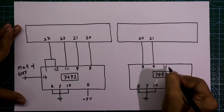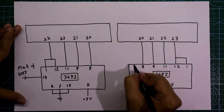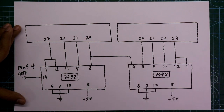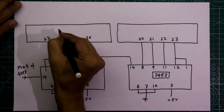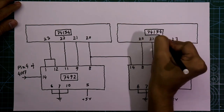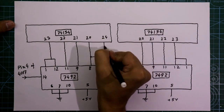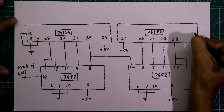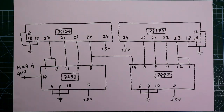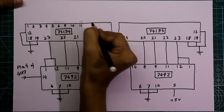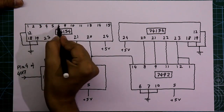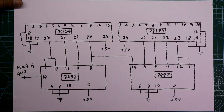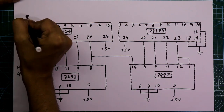Pin number 14 of the second 7492 IC is connected to pin number 8 of the first 7492. These two ICs are 74154. Pin number 24 is connected to plus 5 volts, and pin numbers 12, 18, and 19 are connected to ground. The LED connection pin order is: 1, 2, 3, 4, 5, 6, 9, 10, 11, 13, 14, and 15.